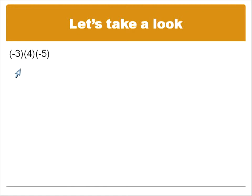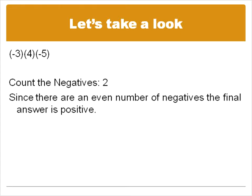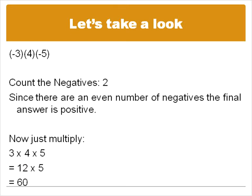Here's a multiplication question: negative three times four times negative five. Our rule says we're going to count the number of negatives. Inside here I have one, two negatives — two negative numbers. Since there are an even number of negatives, the final answer will be positive. Because it's a positive answer, now I just need to multiply three times four times five. Starting on the left and moving to the right: three times four is twelve, twelve times five is sixty. My final answer is going to be positive sixty.